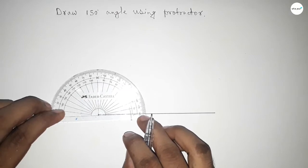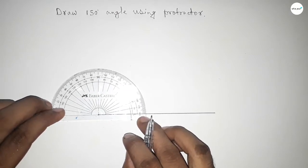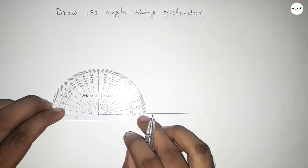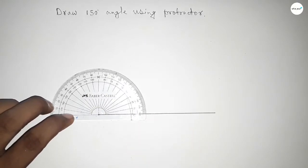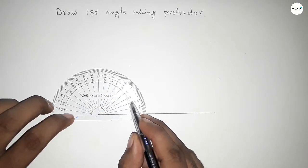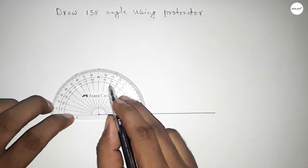Now putting the protractor on the line perfectly. Then we have to count the angle. So this is 0, 10, 20, 30, 40, 50, 60, 70.